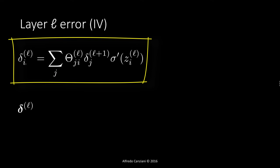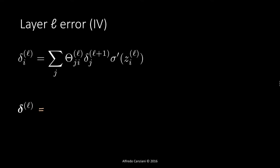Substituting back, delta_i of layer L equals the sum over j of Theta_ji of layer L times delta_j of layer L plus 1, times the derivative of the nonlinear function at z_i of layer L. In vectorial form, given that component i of the error at layer L equals the sum of Theta_ji (not Theta_ij) of layer L multiplied by the error component j at layer L plus 1, times the derivative of the nonlinear function of the same component, this can be written as: Theta of layer L transposed, multiplied by the error at the following layer, component-wise multiplied by the derivative of the nonlinear function at layer L for the weighted input at layer L.